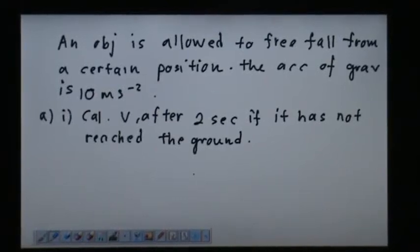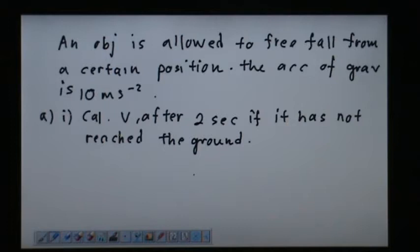An object is allowed to free fall from a certain position. The acceleration of gravity is 10 meters per second squared. You must always remember when an object is dropped - the keyword is 'drop' - when you drop something from a height, your initial velocity is zero. This is affected by acceleration of gravity.